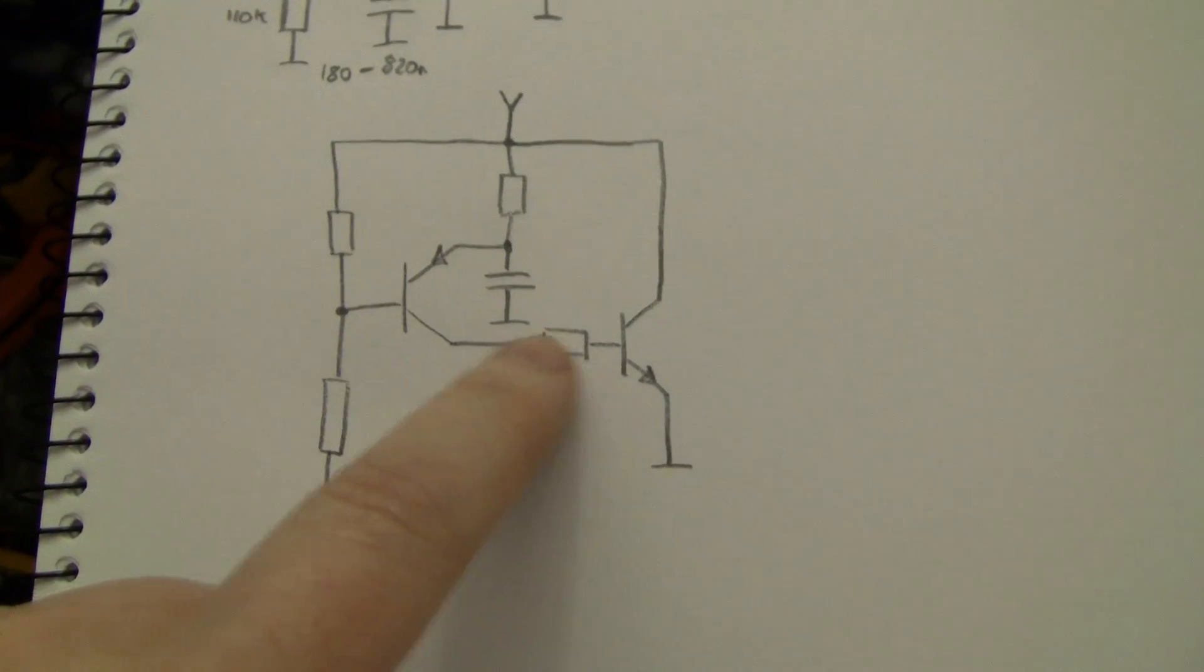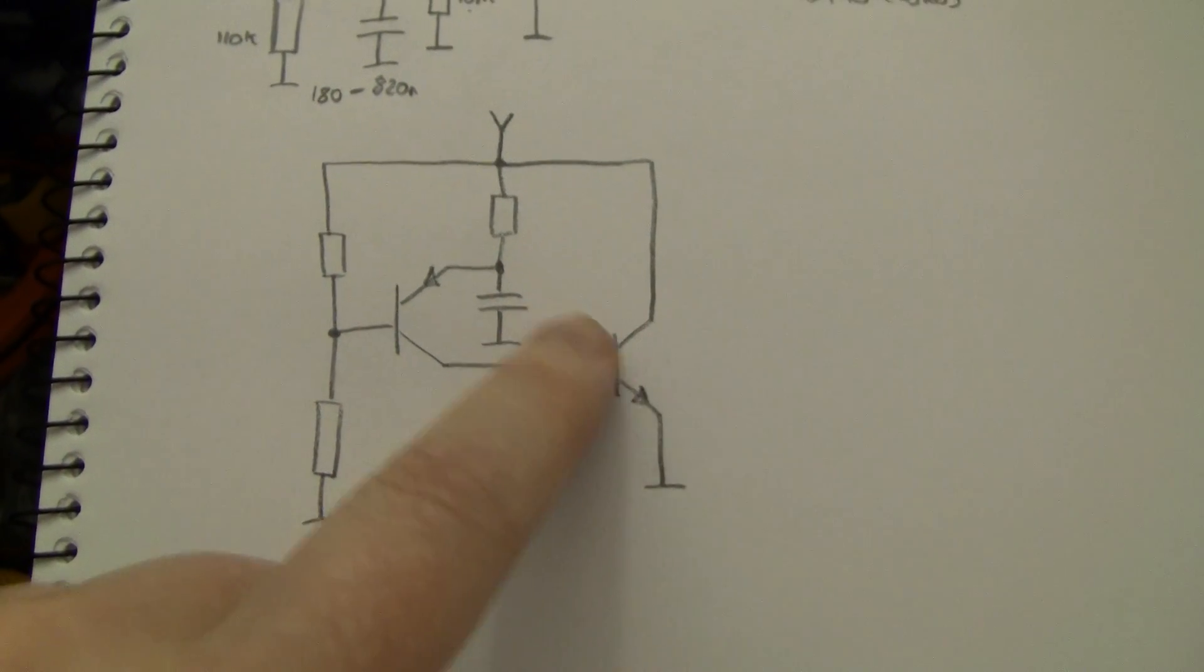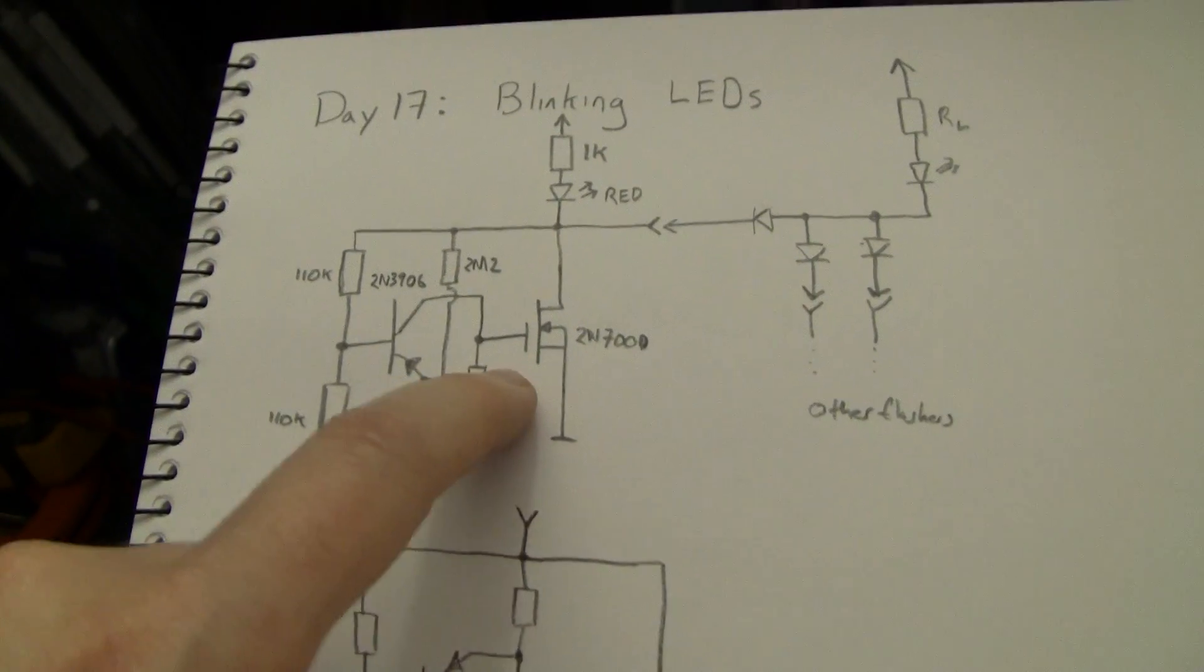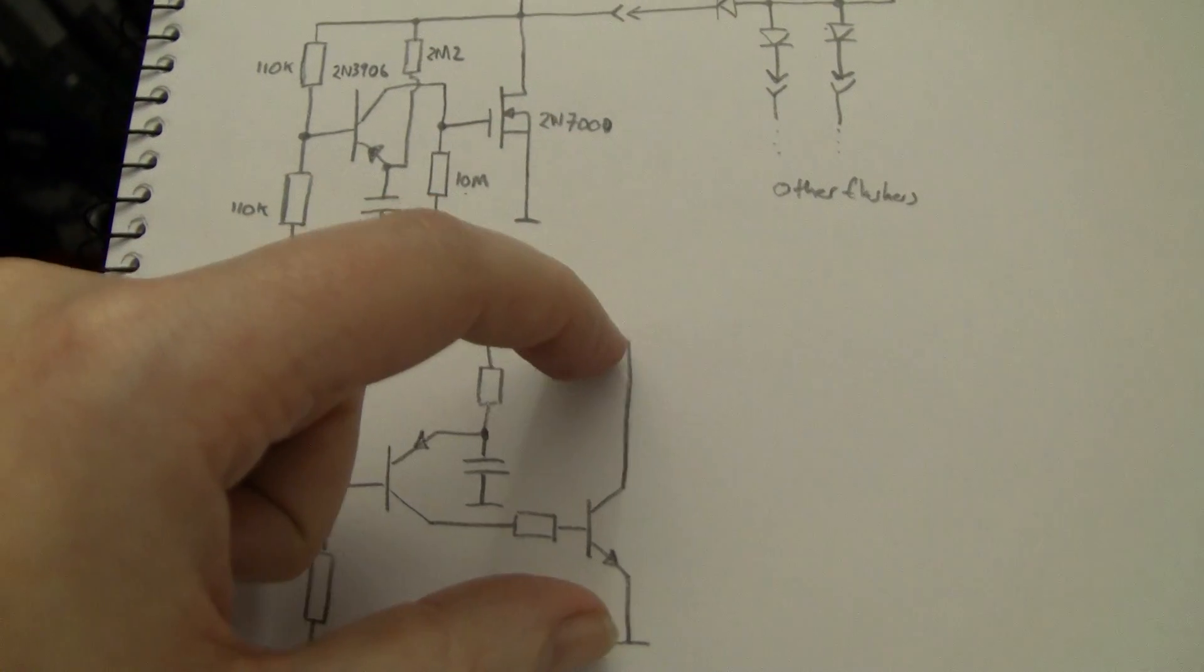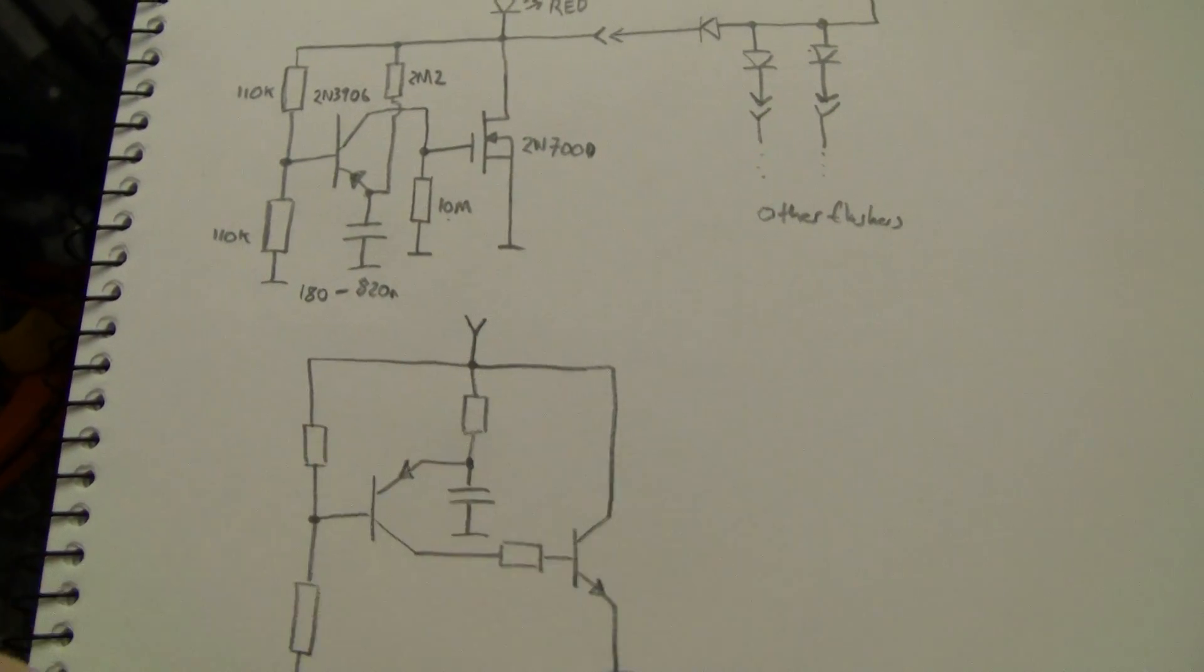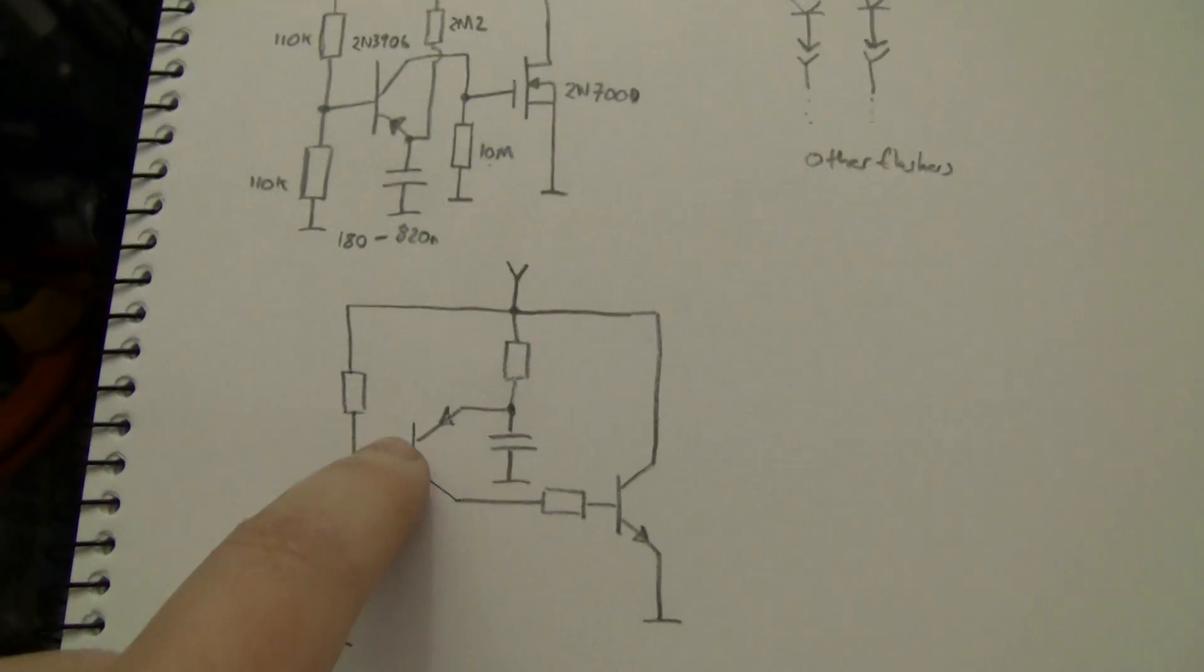As it turns on it provides some base current to the NPN or in this case the voltage on the gate of the MOSFET.